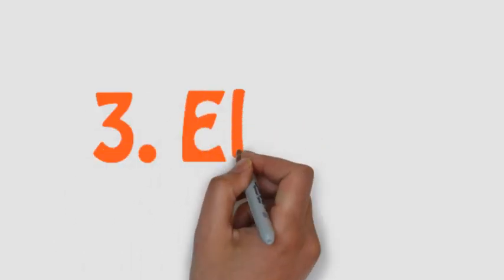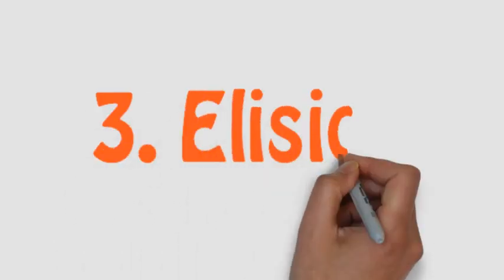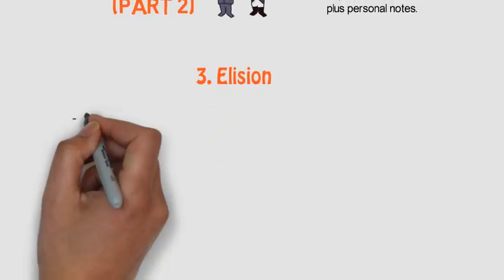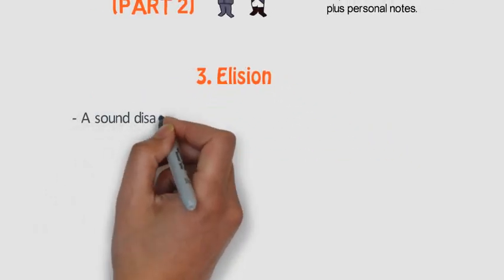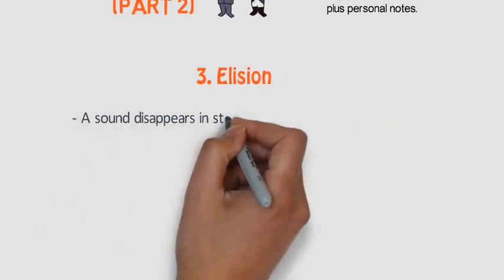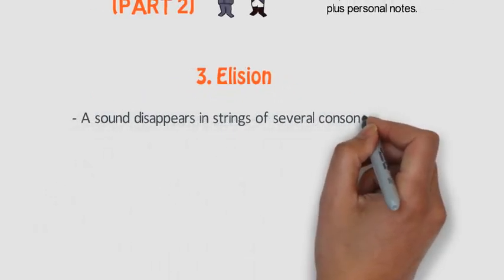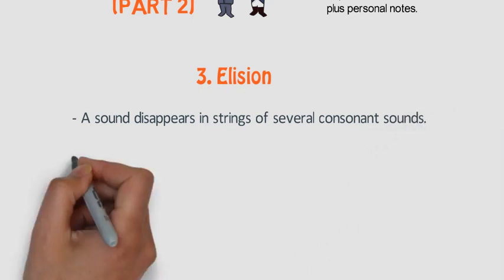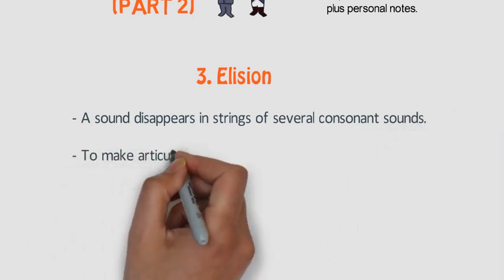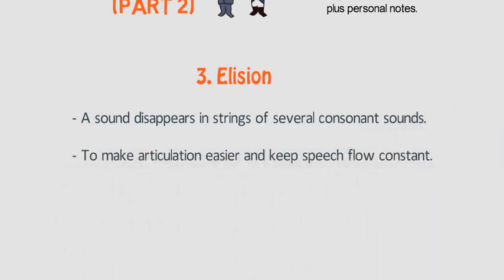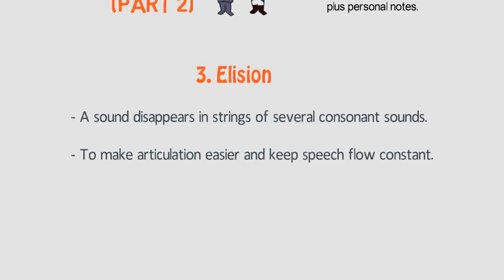Feature number three: elision. Sometimes a sound disappears or is dropped. When we have strings of several consonant sounds, we do this so the articulation of these words can be easier and so we can keep a constant speech flow.